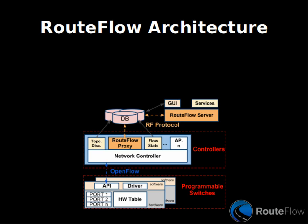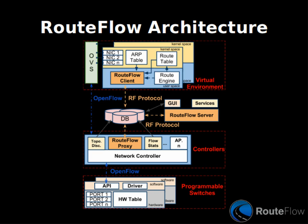The core module is the RouteFlow server, a standalone application responsible for resource registration and mapping of OpenFlow devices through routing protocol stacks. The desired routing services are implemented by translating routing information into OpenFlow entries. The actual routing information is collected by RouteFlow clients, tiny user-based daemons that run on virtualized Linux machines along the routing protocols.